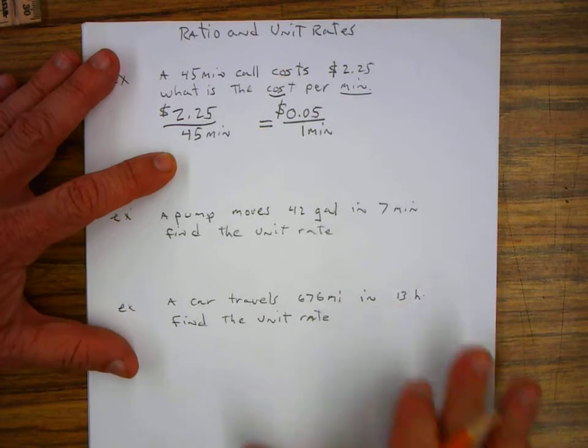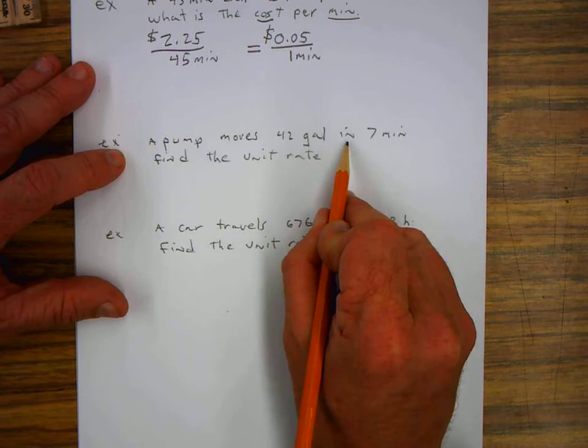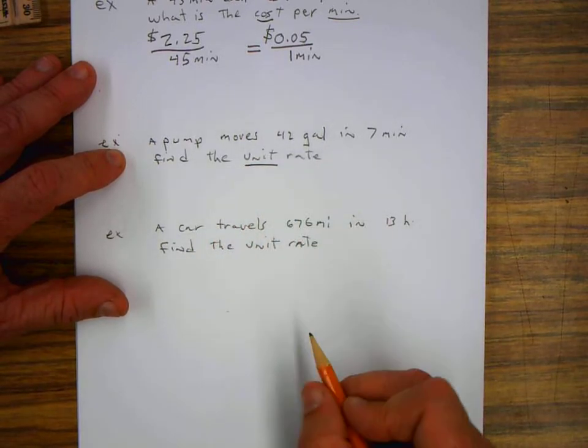On this next problem, a pump moves 42 gallons in 7 minutes. Find the unit rate.